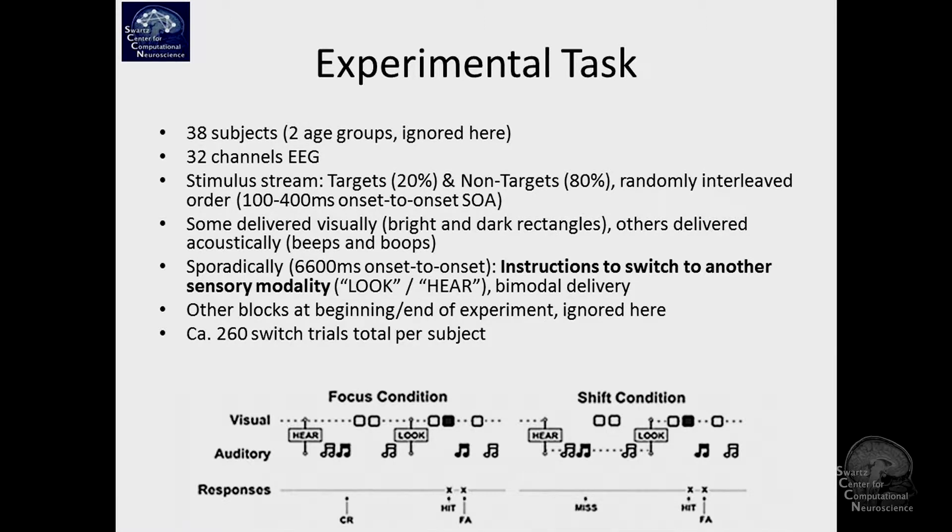And what happened here is the following. There was a stream of stimuli being presented to the person. And a fraction of these stimuli were designated as targets, 20%, and a fraction of them were designated as non-targets, 80%. The order was random. And there was something like 100 to 400 milliseconds between the onset. So it was rather fast.